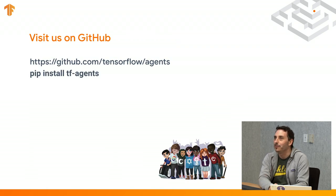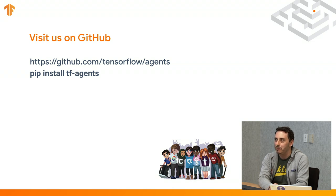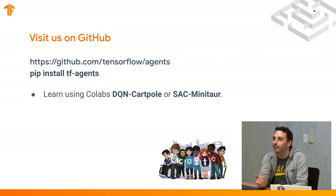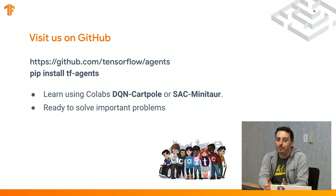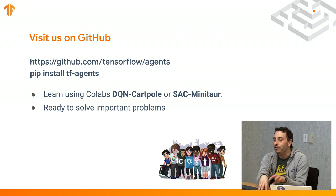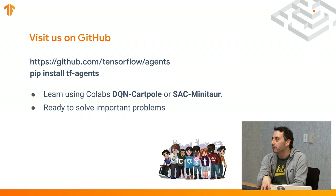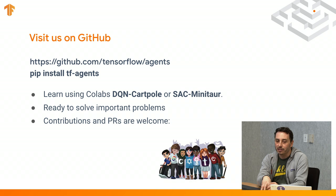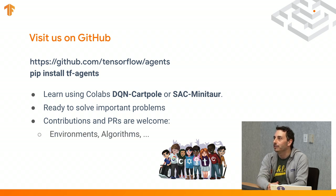You can go to GitHub TensorFlow Agents, get the package via pip install, and start learning with our colabs and tutorials like the CartPole and MiniAtar examples. Production quality is something we really care about — the codebase, tests, and everything is designed so you can actually deploy these models to solve important problems. Games are used as examples because they're easy to understand, but many of our real applications are more serious problems. We welcome contributions and pull requests with new environments, new algorithms, or other contributions to the library.